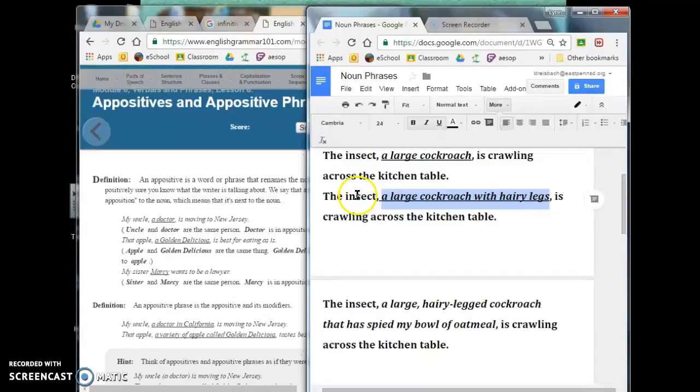So, even if we were to switch it out, we could say, a large cockroach with hairy legs is crawling across the kitchen table. Or, we could still say, the insect is crawling across the kitchen table. And the same idea is being communicated. But the appositive lets us add in a lot more detail. So, that's what they're really good for.